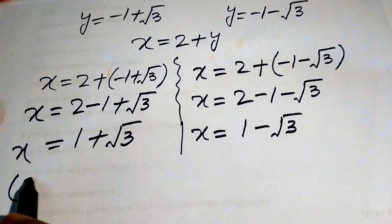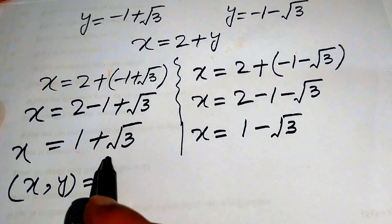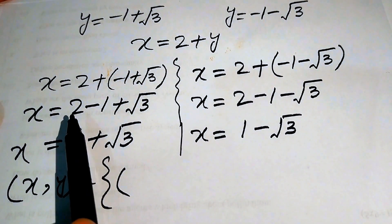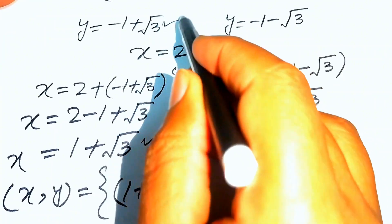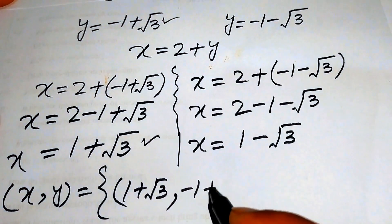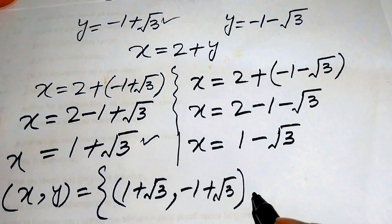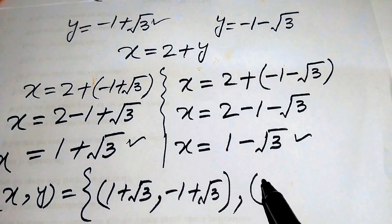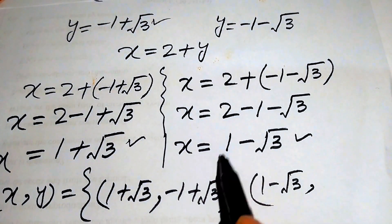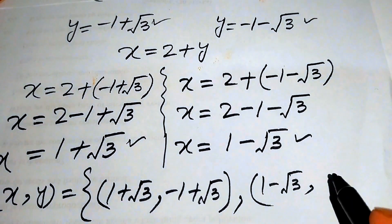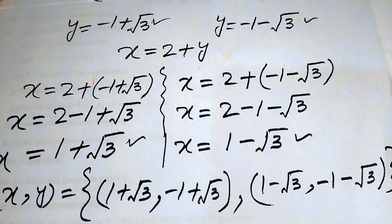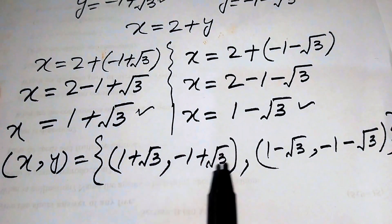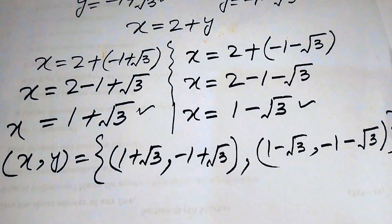The solution set (x, y) gives us two solutions. The first solution is x equals 1 plus square root of 3 and y equals minus 1 plus square root of 3. The second solution is x equals 1 minus square root of 3 and y equals minus 1 minus square root of 3. This is the final answer. Thank you so much for watching this video, please subscribe to my channel for more exciting videos.